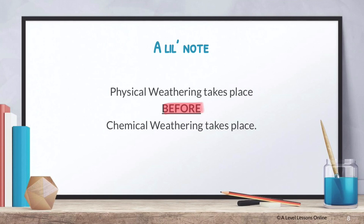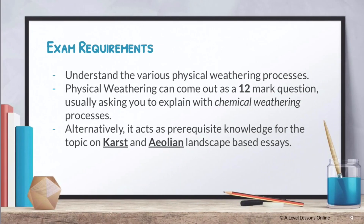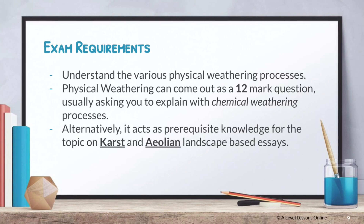So now we move on to your exam requirements. Basically you just need to understand the various physical weathering processes — what are the different types. After which you also need to know that these are basically prerequisites to your karst and aeolian landscape questions. You need these processes to explain why certain things happen in karst and certain aeolian landforms can occur. Just take note that it tends to come out as a 12-mark question where you'll be asked to explain the chemical weathering processes and the different types. If it doesn't come out as an essay question, usually you just need to use it to substantiate your explanation for your karst and aeolian-based essay questions.